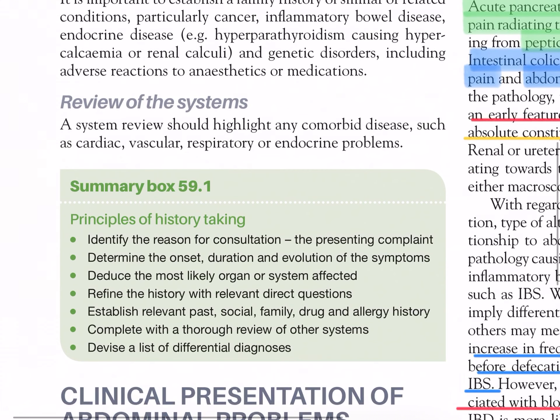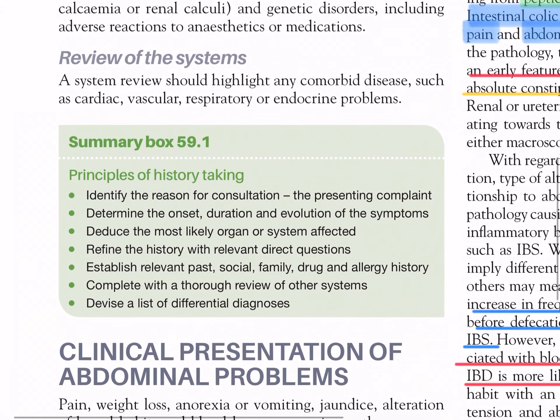Review of the systems: a system review should highlight any comorbid disease such as cardiac, vascular, respiratory, or endocrine problems. Summary box 59.1 — Principles of history taking: identify the reason for consultation (the presenting complaint); determine the onset, duration, and evolution of the symptoms; deduce the most likely organ or system affected; refine the history with relevant direct questions; establish relevant past, social, family, drug, and allergy history; complete with a thorough review of other systems; devise a list of differential diagnoses.